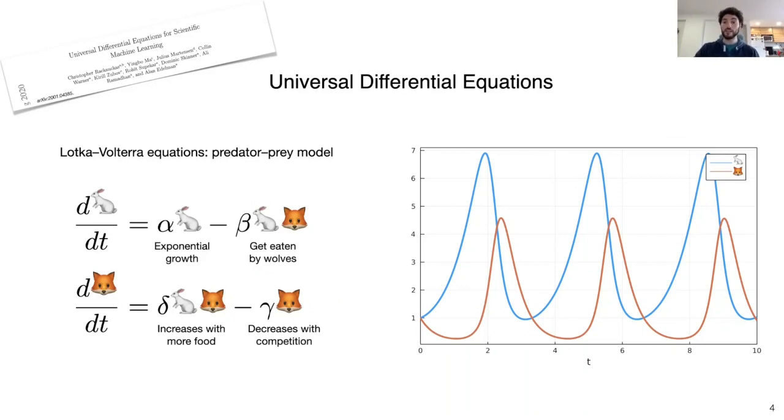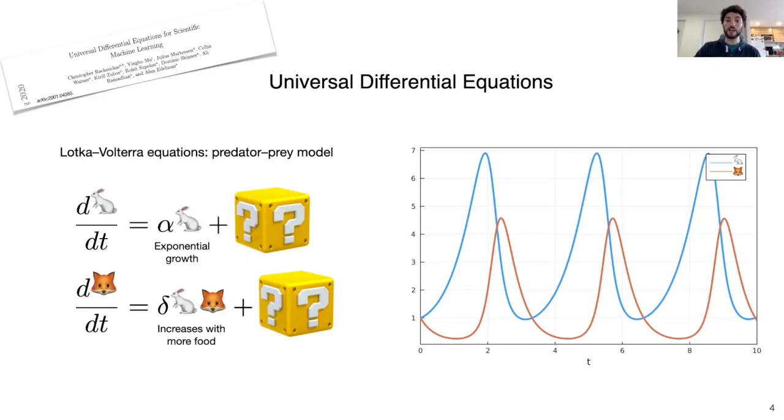Suppose that you have this data but for some reason you cannot build a full mechanistic model. However, you can do some educated guesses on some parts of a model.